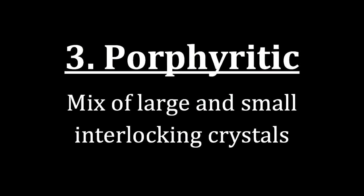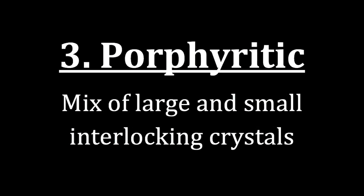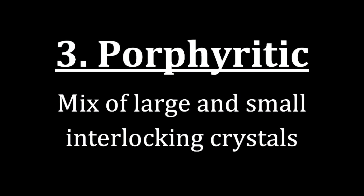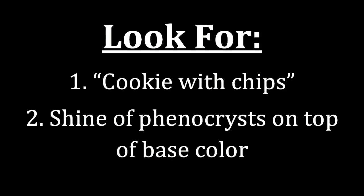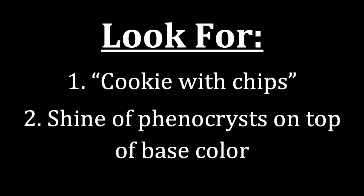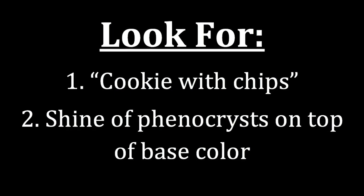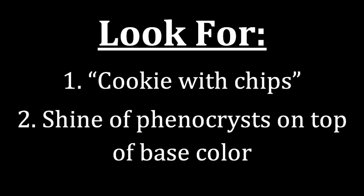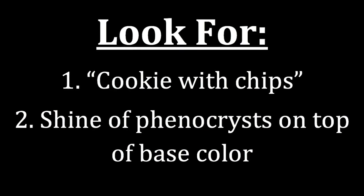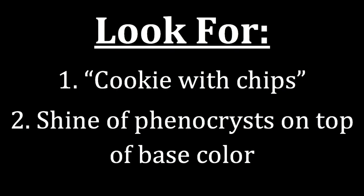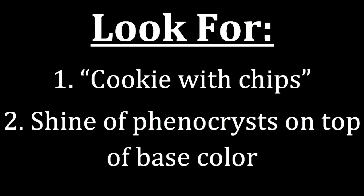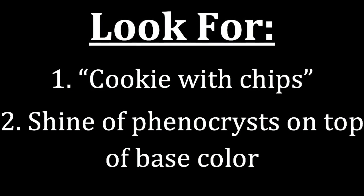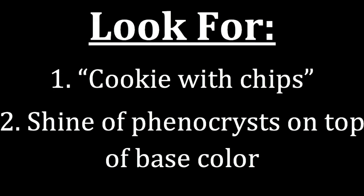The next texture is called porphyritic. In a porphyritic rock, we have a mix of large and small interlocking crystals. What we look for is — like a chocolate chip cookie — the large crystals being the chips, which we call phenocrysts, and the small crystals being the groundmass surrounding them. The second thing we look for is shine of the phenocrysts on top of the base color of the small crystals in the background rock.